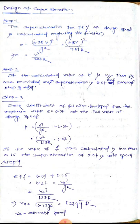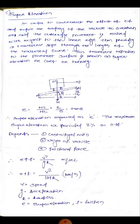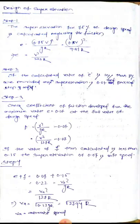The formula of super elevation is e plus f equal to v² by gR, where v is in meters per second. Or alternatively, e plus f equal to v² by 127R where v is in km/h. For Step 1, neglecting friction, e equals v² by 225, because 0.75 × v² divided by g×R simplifies to v² by 225.